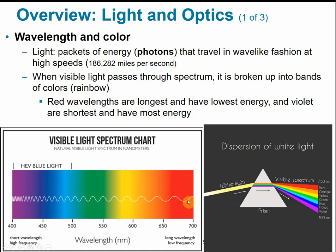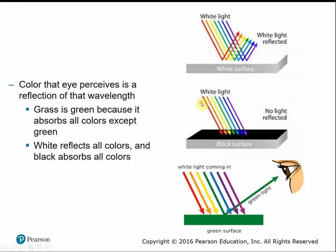Red wavelengths are the longest and have the lowest energy. Violet waves are the shortest and have the most energy. When you see and perceive a color, what you're seeing is just the reflection of that wavelength. Grass is green because it absorbs all other wavelengths except green, which is reflected back. The sky is blue because it absorbs all wavelengths except blue.